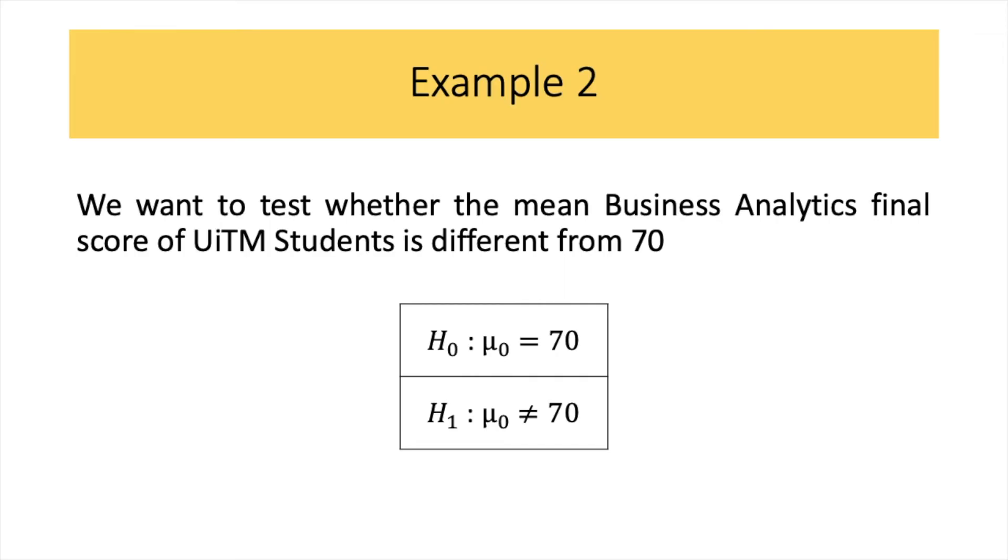Let's look into another example. We want to test whether the mean business analytics final score of UITM students is different from 70%. So, your H0 is your hypothesized mean equal to 70.